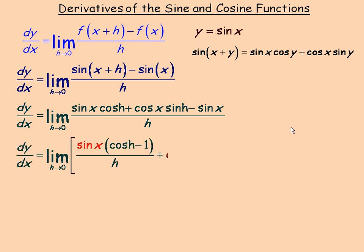Notice that there is a common factor. If you group the first sine x cos h and the minus sine x together, there's a common factor of sine x. Factoring sine x out of sine x cos h gives cos h, and factoring sine x out of minus sine x gives minus one.